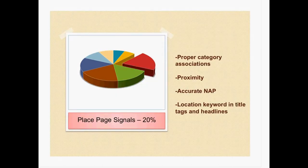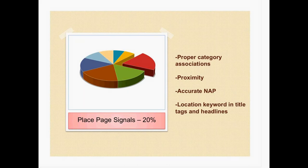The first and biggest portion of your local SEO is going to be your place page signals. This includes property category associations and proximity, which includes the accurate NAP — NAP stands for name, address, and phone number — which should match consistently across your site and anywhere you have it on the web. Query associations can be on Google Places, Google+, and multiple citations that we'll talk about later. Also important is having a location keyword in your title tags and headlines, which is pretty crucial.